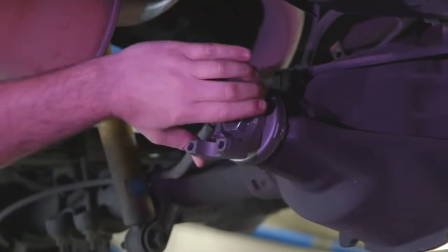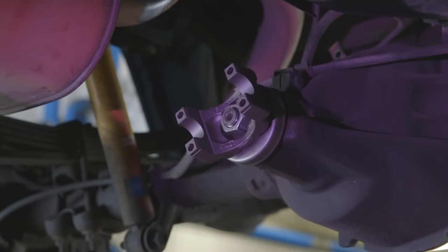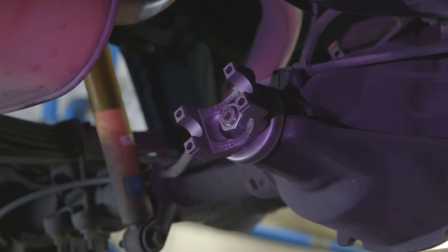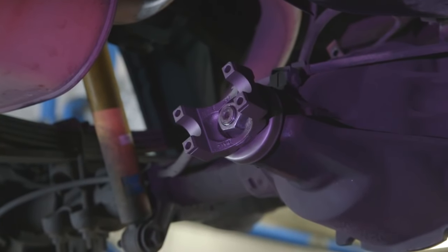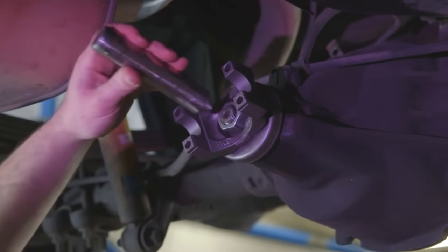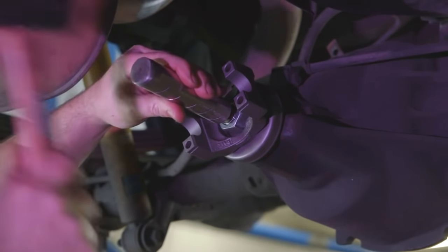Tighten the pinion nut until you can begin to feel resistance when turning the pinion gear back and forth. Tap both sides of the pinion gear with a punch to ensure the races are fully seated.